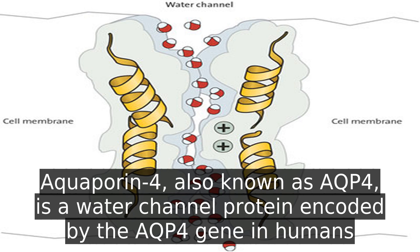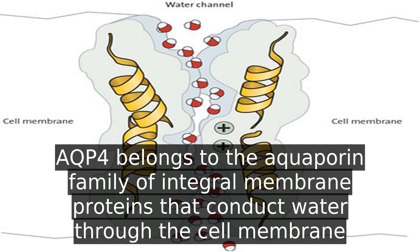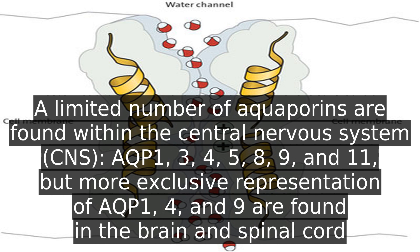Aquaporin 4, also known as AQP4, is a water channel protein encoded by the AQP4 gene in humans. AQP4 belongs to the aquaporin family of integral membrane proteins that conduct water through the cell membrane.